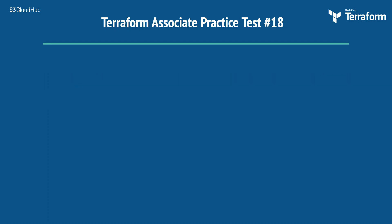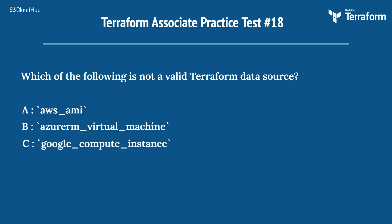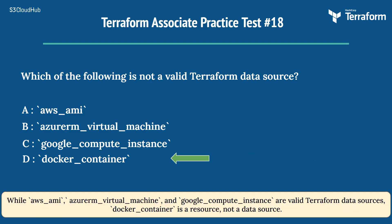Question 18: Which of the following is not a valid Terraform data source? Options: A) aws_ami, B) azurerm_virtual_machine, C) google_compute_instance, D) docker_container. The right answer is D) docker_container. While aws_ami, azurerm_virtual_machine, and google_compute_instance are valid Terraform data sources, docker_container is a resource, not a data source.